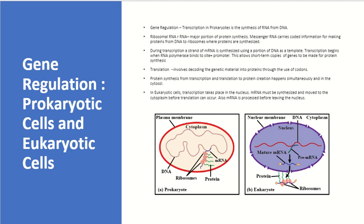Gene regulation involves transcription in prokaryotes to form the synthesis of RNA from DNA. Ribosomal RNA is a major portion of protein synthesis. Messenger RNA carries coded information for making proteins from DNA to ribosomes, where proteins are synthesized by chaining together multiple amino acids. During transcription, a strand of mRNA is synthesized using a portion of DNA as a template, and the process begins when RNA polymerase binds to a promoter site.